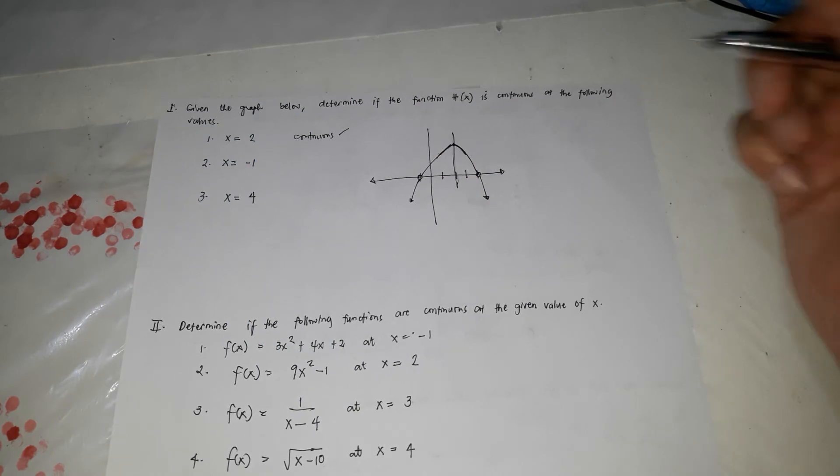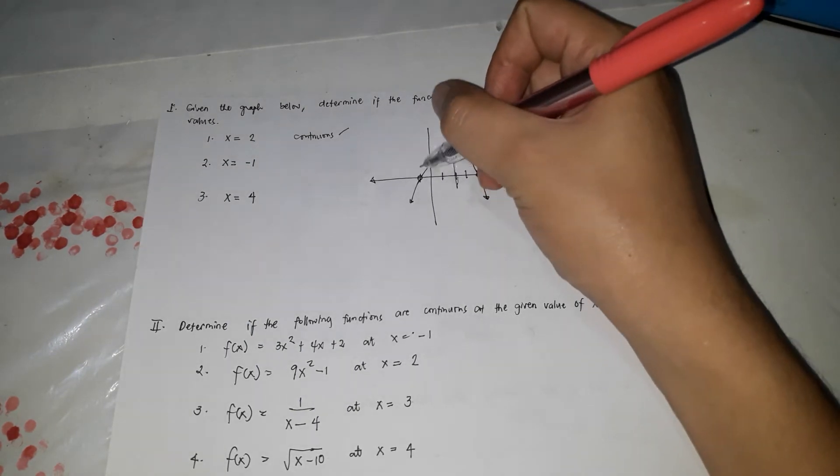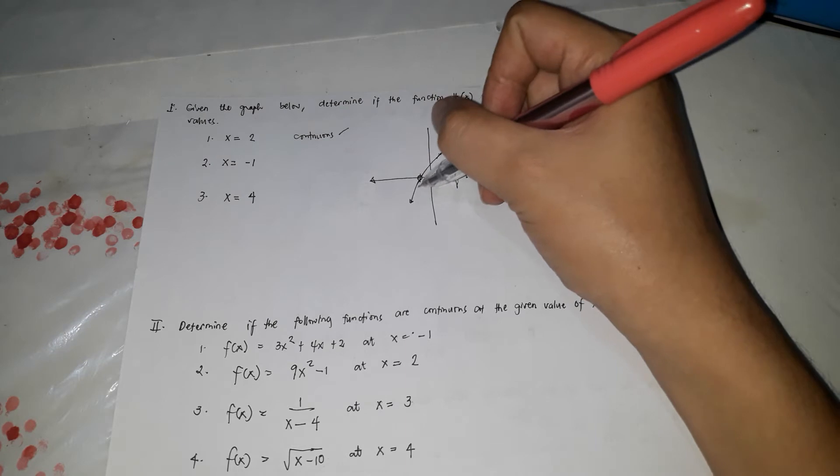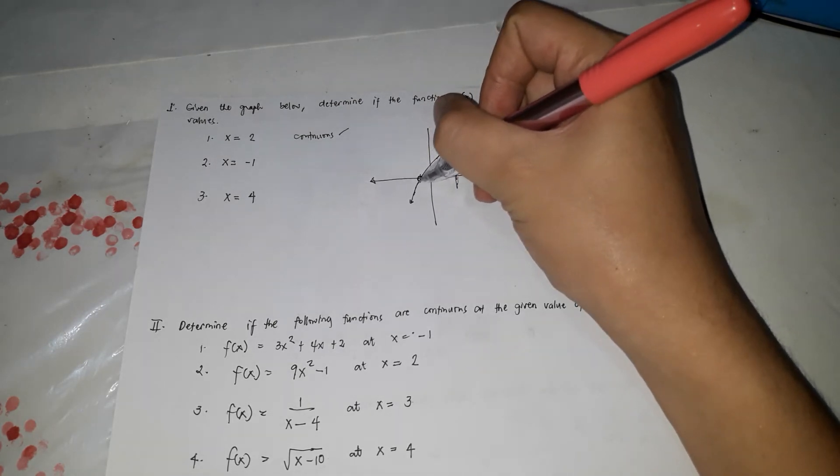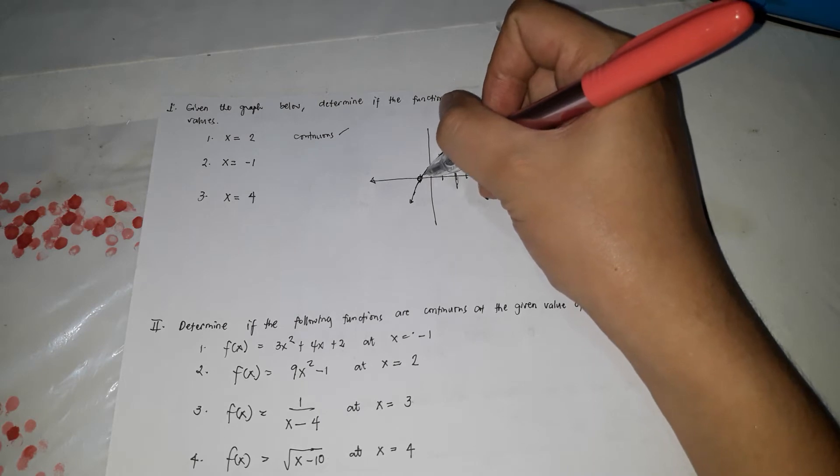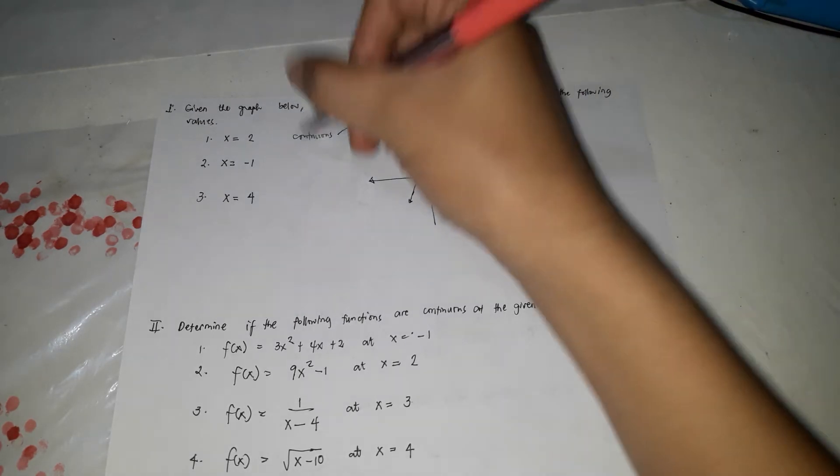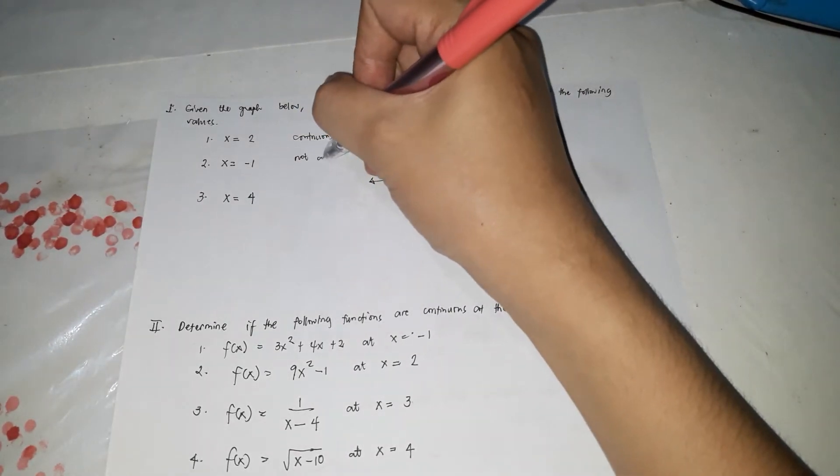If this x is equals to negative 1, this is negative 1. So, x is equals to negative 1. So, galing ka dito, kasi open siya, ibig sabihin, magja-jump ka. Kasi kung magja-jump ka, ibig sabihin niyan, it's not continuous.